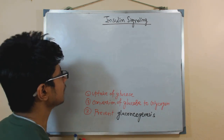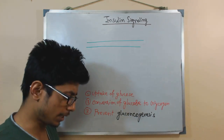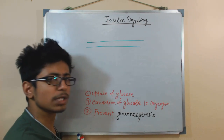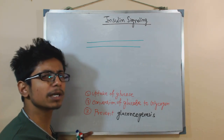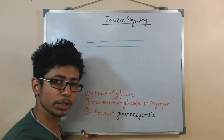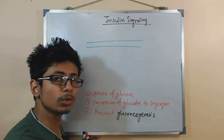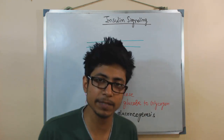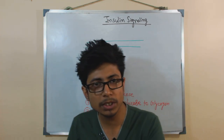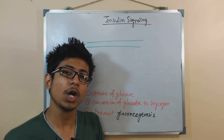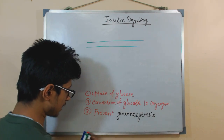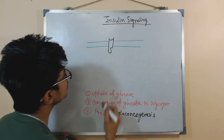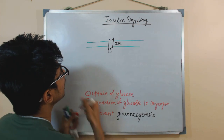If we draw the signaling process in a cell, there are different proteins present inside the cell controlling these different tasks, because gluconeogenesis and glucose uptake involve many different enzymes. There are certain signaling molecules inside the cell which ultimately tell the proteins directly involved in glucose metabolism what to do. At the cell membrane, there is a receptor called the insulin receptor, or IR, and insulin comes and attaches to this receptor.